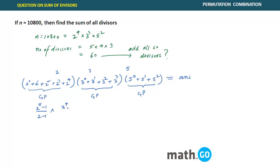Yes, 4. 3 raised to power 4 minus 1 by 3 minus 1, into 5 raised to power 3 minus 1 by 5 minus 1, because common ratio here is 5.